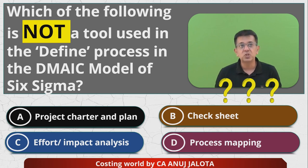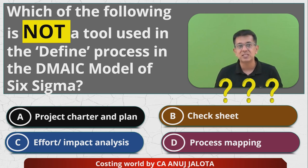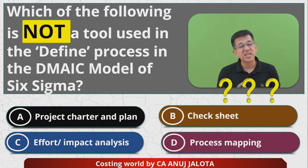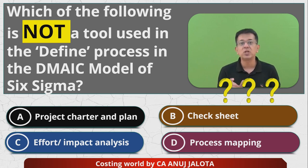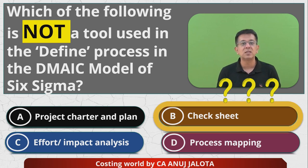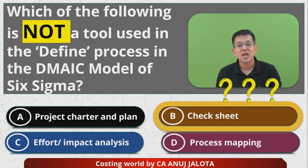Coming back to the question: which of the following is NOT a tool used in the defining stage of the DMAIC model? The answer is Check Sheet — option B. Check Sheet is always used in the measuring stage, not the defining stage. That is the correct answer. See you next time in another question. Take care, happy learning!